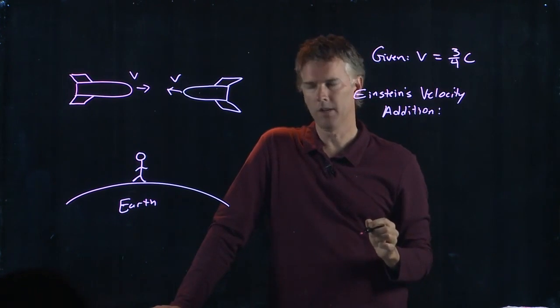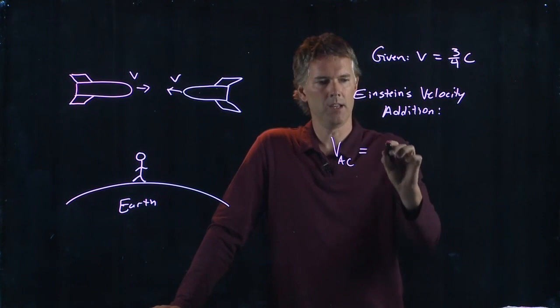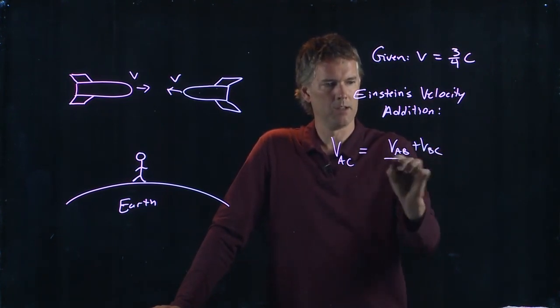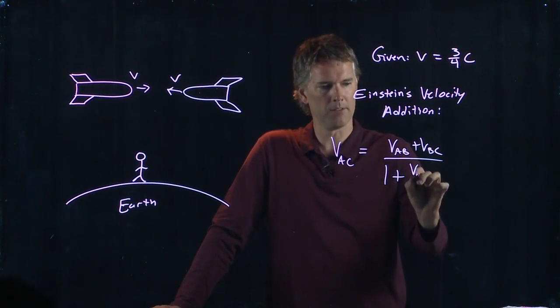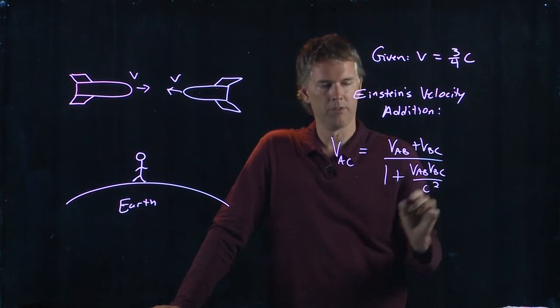And Einstein's velocity addition rule was the following. VAC equals VAB plus VBC divided by one plus VAB, VBC all over C squared.